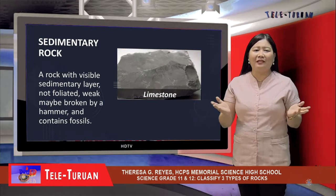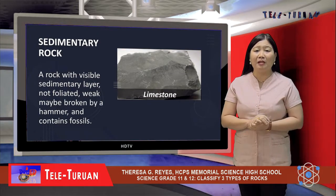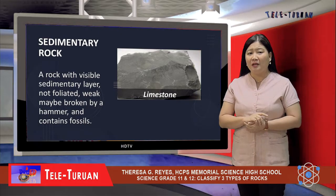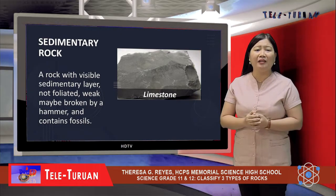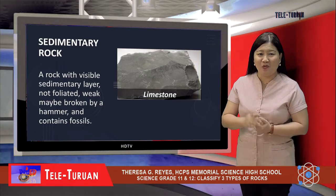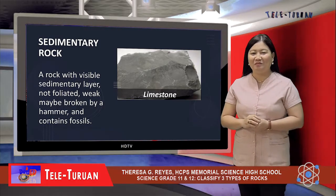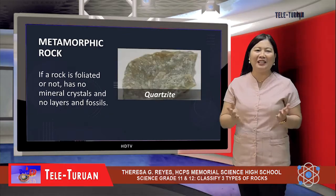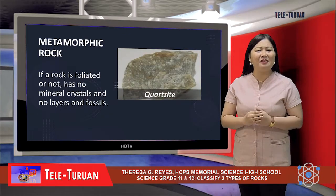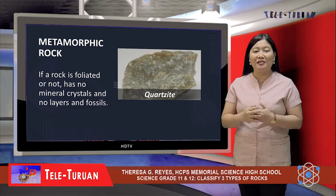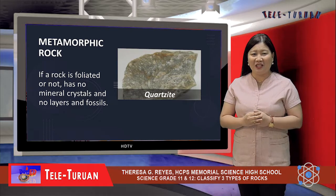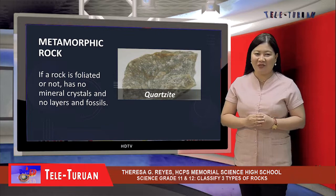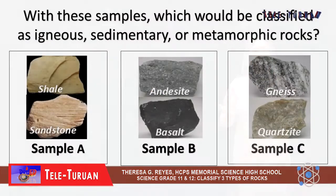On the other hand, a rock with visible sedimentary layers, not foliated, and generally weak — may be broken by a hammer — and contains fossils. What do you think is that rock? Yes, that is a sedimentary rock. Finally, if a rock is foliated or not, has no mineral crystals, and no layers and fossils — that is a metamorphic rock. Can you classify these rocks?